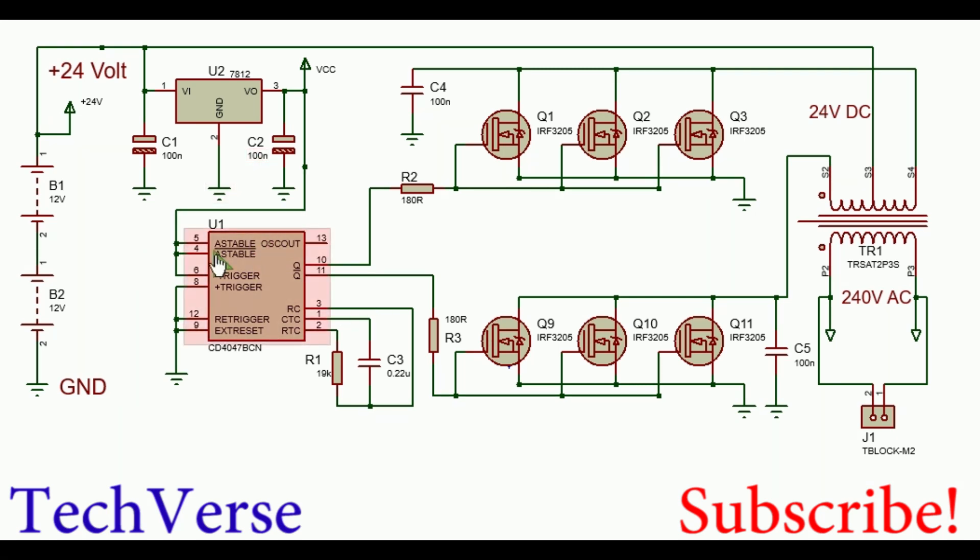Connect the VCC pin 14, pin 5, 4, and 6 to 12 volts from the regulator, and connect pins 8, 12, and enable pin 9 to ground. The frequency is determined by the timing resistor R1 and the timing capacitor C3.